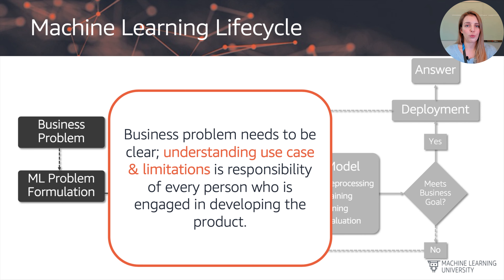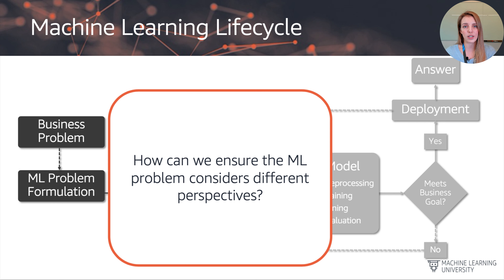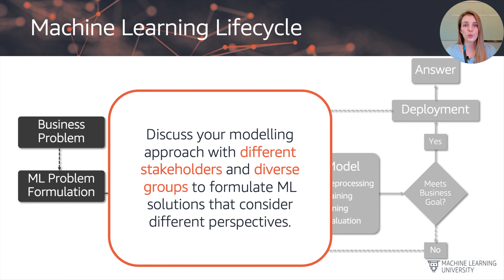Now we're going to go through the lifecycle step by step and look at what specific actions we can take to implement and adhere to best practices and fairness principles. When it comes to formulating the business problem, it's all about understanding the use case and its limitations — the responsibility of everyone involved in developing the project. Having a diverse group of thought at this stage can really help mitigate bias before it even comes to data collection and model build.